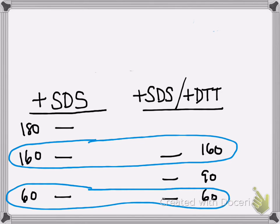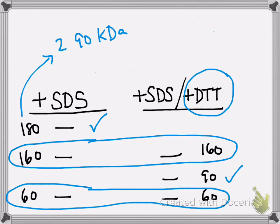What's different is that a 180 band disappears and a 90 band appears when you've added DTT to the mix. So this is telling us that there's two 90 kilodalton subunits held together by disulfide bonds. Because when you use DTT, this 180 gets broken up into two 90 kilodalton pieces.